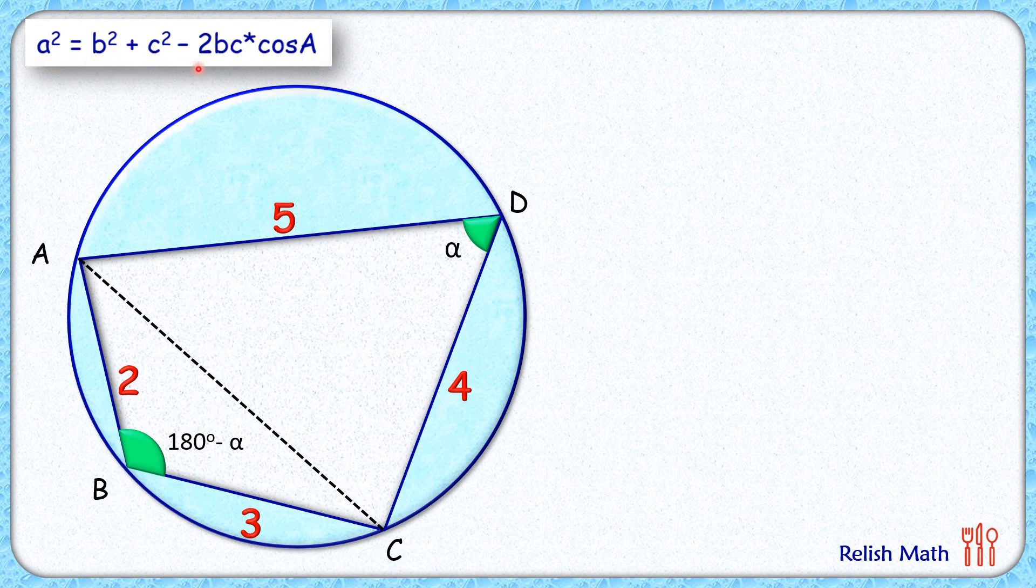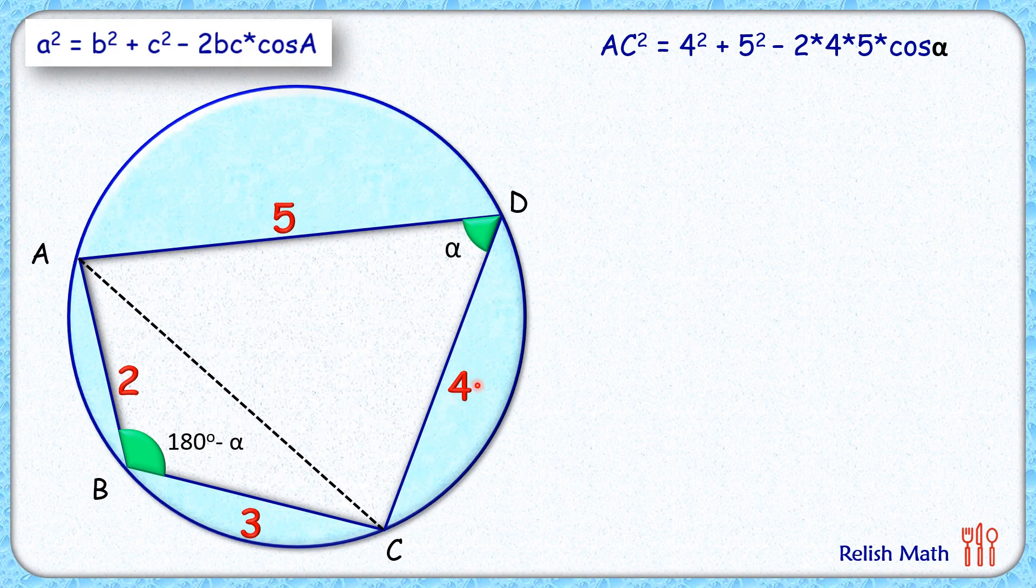So, using this cosine rule in triangle ADC, we get AC squared is 5 squared plus 4 squared minus 2 times 5 times 4 times cos alpha. Simplifying it, we'll get our equation in this form.